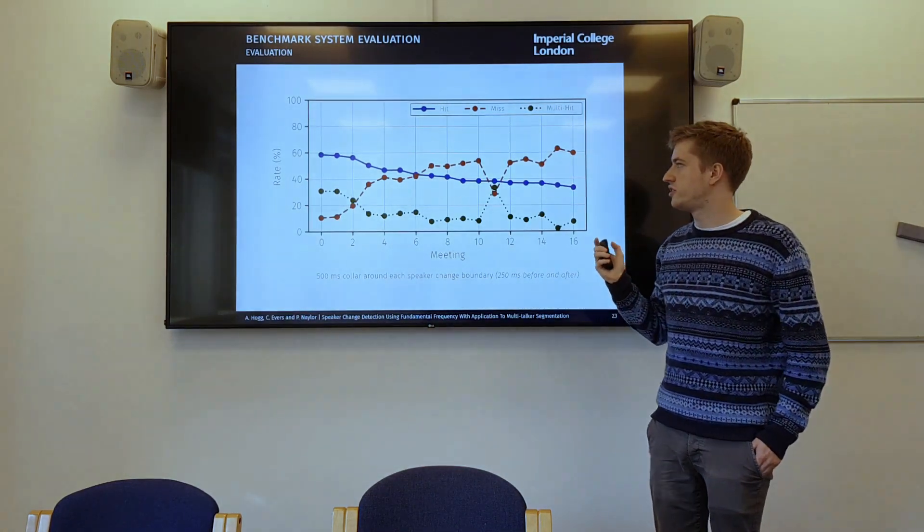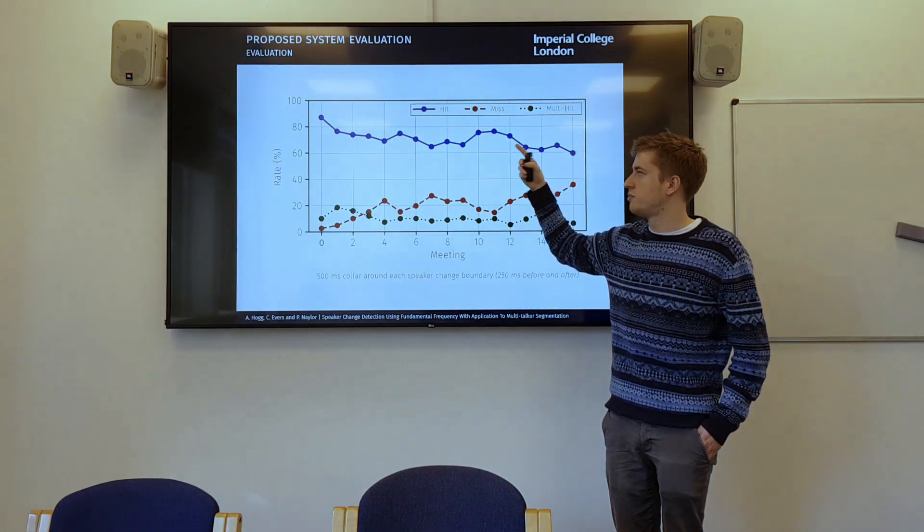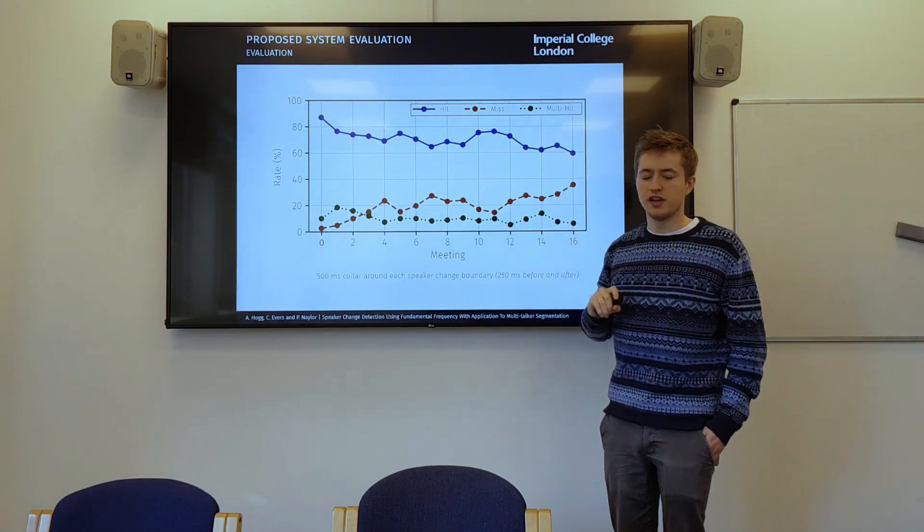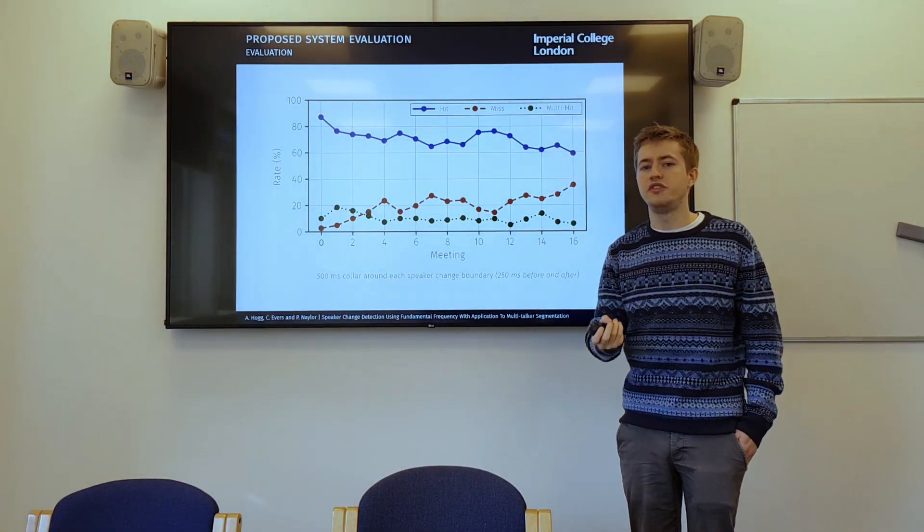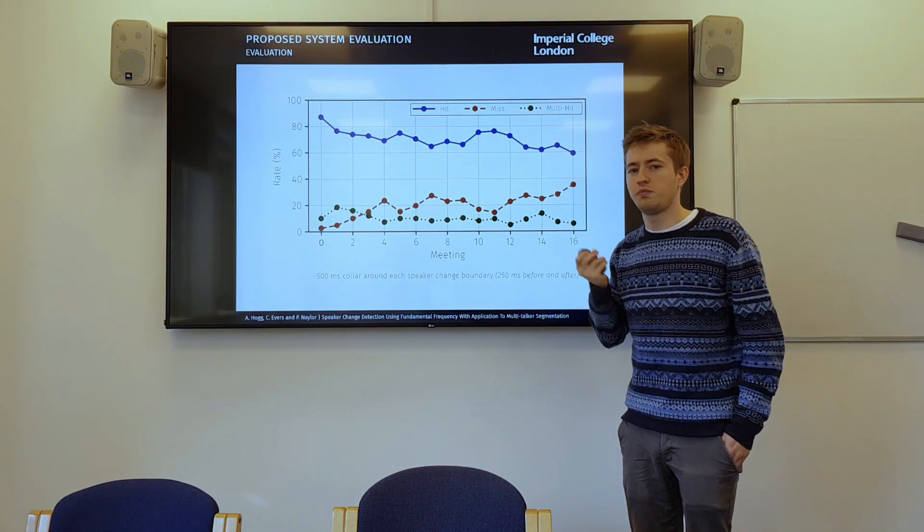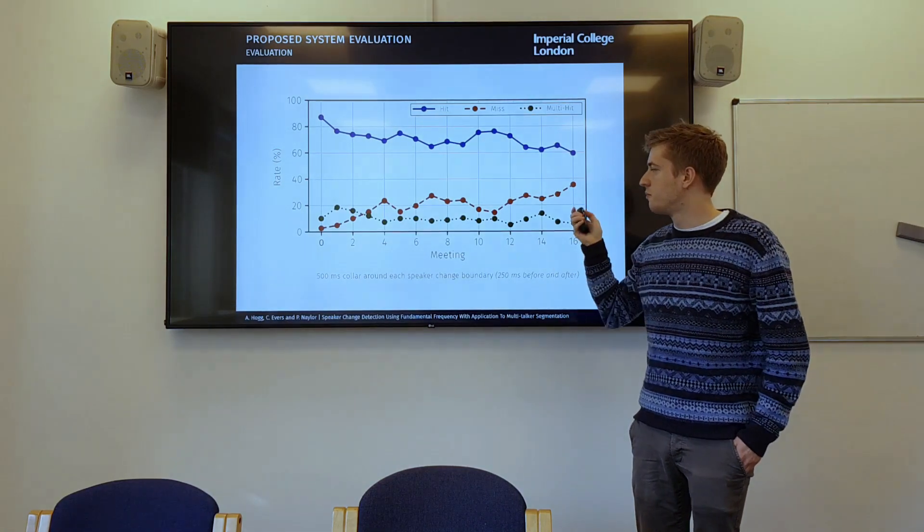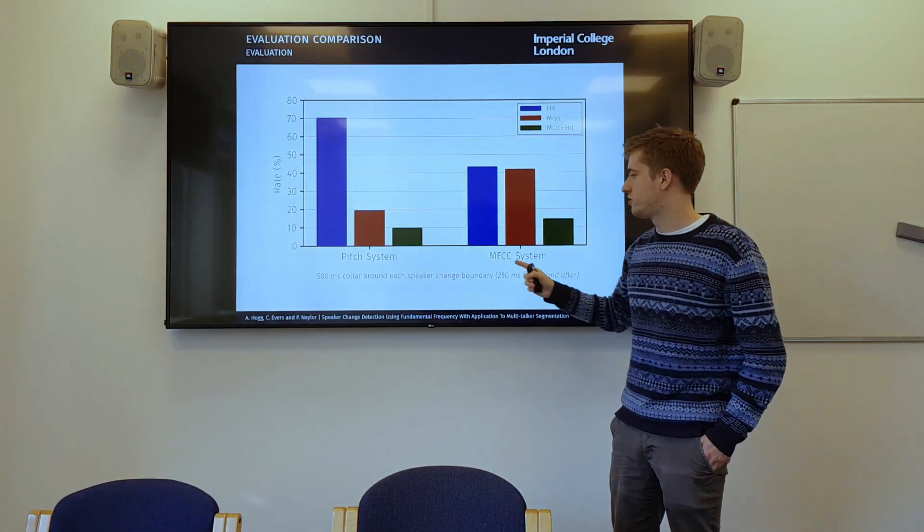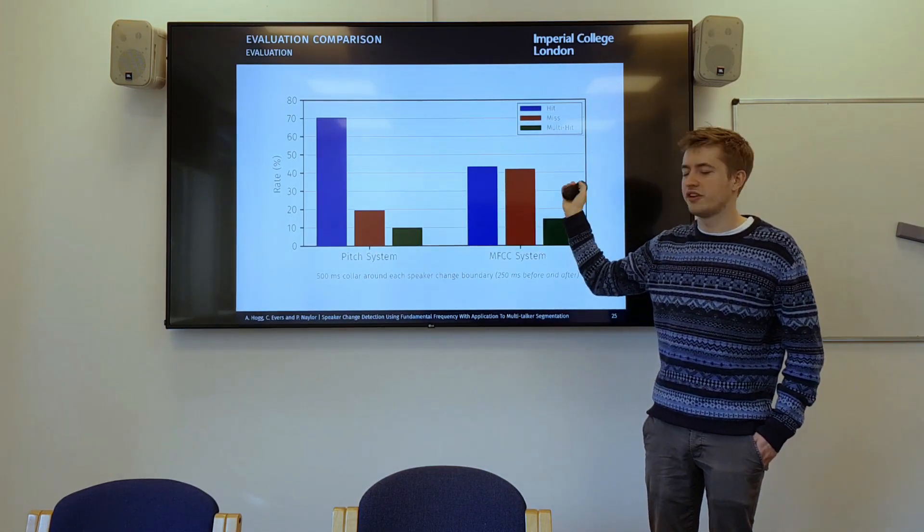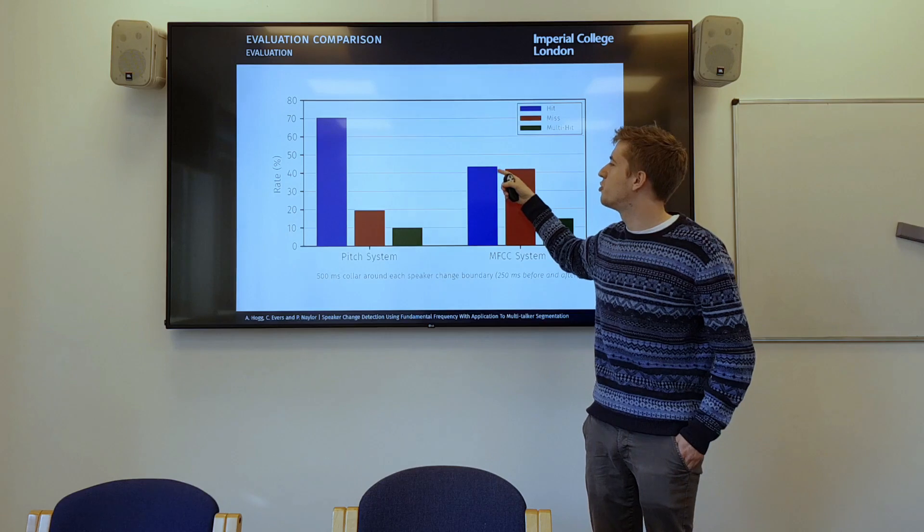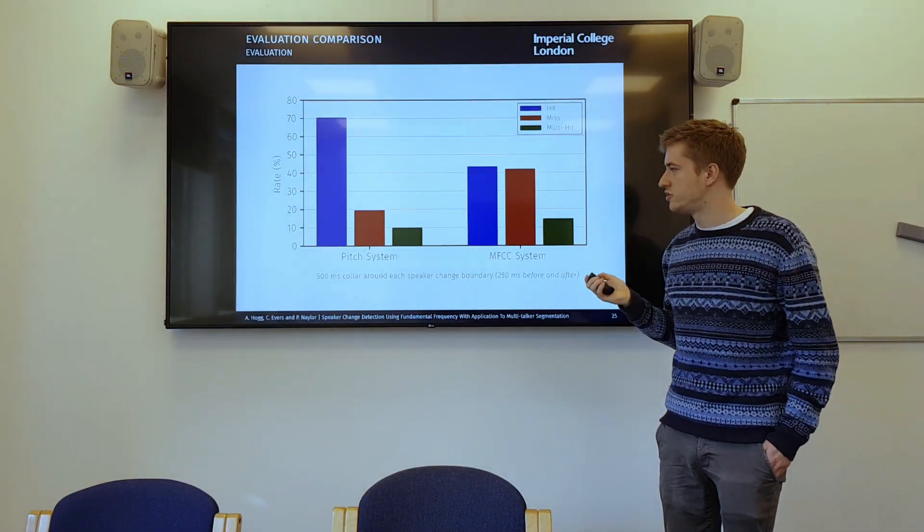However, when we use our pitch estimation algorithm, using the pitch information, you can see that it massively increases. So there's a massive jump, and the miss goes massively down. So it shows that actually, if we were just using MFCCs and just using pitch, then it's probably better to just use pitch, which is quite a surprising result. And if you want to look at an average over all the meetings, you can see that this is the improvement we get from about 44% up to about 70% in the hit rate, which is what we mainly care about.